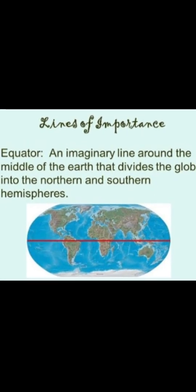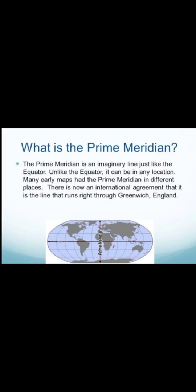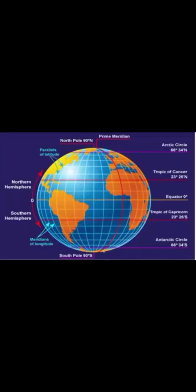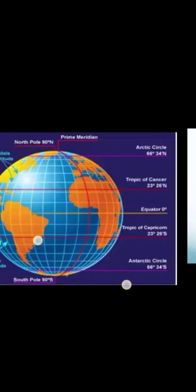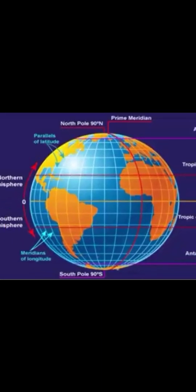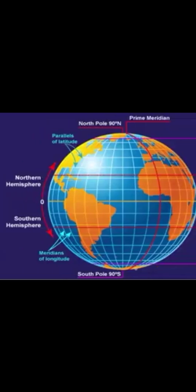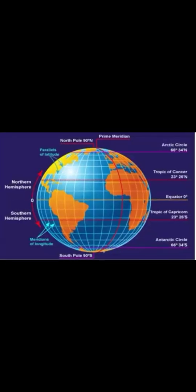The equator is the imaginary line which lies on zero degrees and divides north and south. The prime meridian is the line in the center vertically, which divides east and west. Together, these lines on the earth are important to find climate zones, determine time, and show locations of where you are.